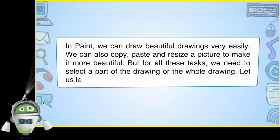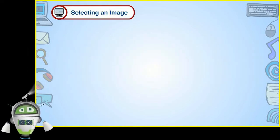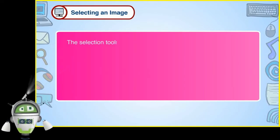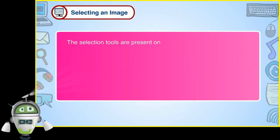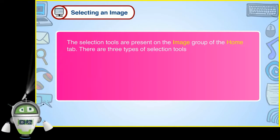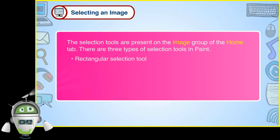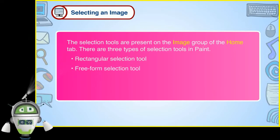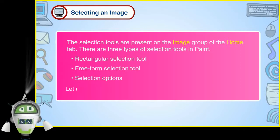Selecting an Image: The selection tools are present on the Image group of the Home tab. There are three types of selection tools in Paint: Rectangular Selection Tool, Freeform Selection Tool, and Selection Options. Let us learn about them one by one.